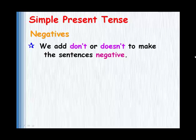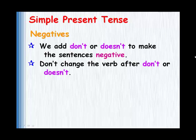To make negative sentences, we add don't or doesn't. And when we do that, the verb doesn't change, which means that we don't add an S to the verb — the same as with questions.